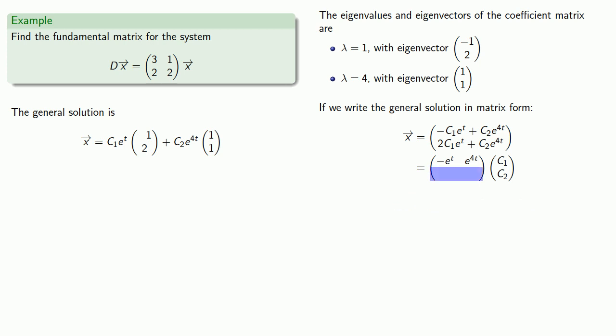Similarly, our second row times our column has to give us 2C1e to the t plus C2e to the 4t. And that means the second row must be... which gives us our fundamental matrix.